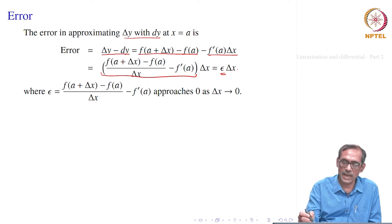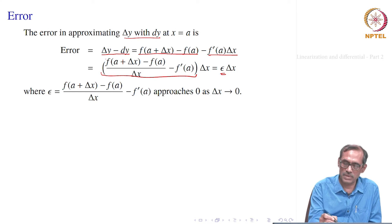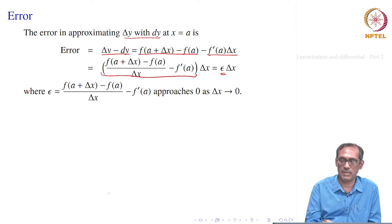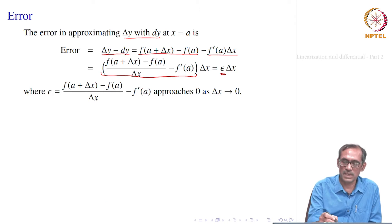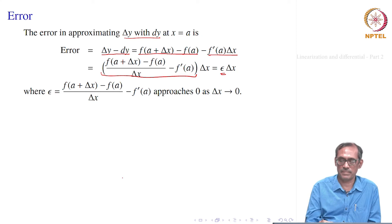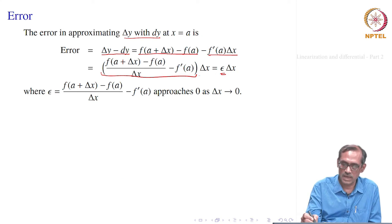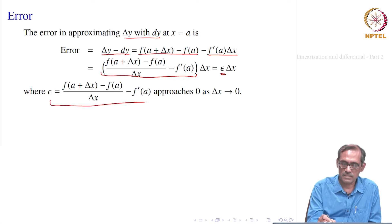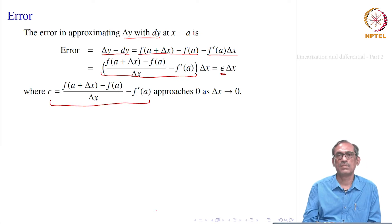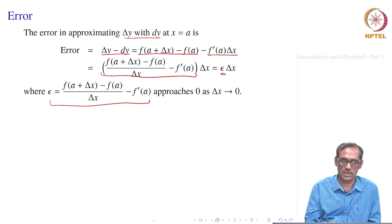When delta x goes to 0, what happens to epsilon? We know that the limit of f of a plus delta x minus f of a divided by delta x minus f prime of a equals 0, because the limit of that difference quotient is equal to f prime of a. So the limit of this expression, which we write as epsilon, equals 0 when delta x goes to 0.